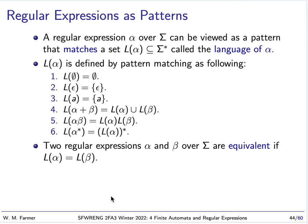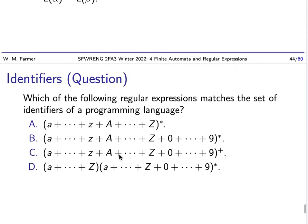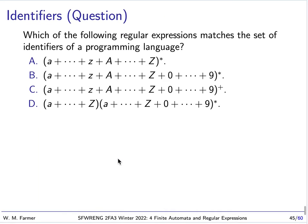We say two regular expressions alpha and beta are equivalent if they match the same language. Most programming languages have a set of identifiers, and we can represent this set using a regular expression. The question is: which of these is the right regular expression to represent the set of identifiers of a typical programming language?